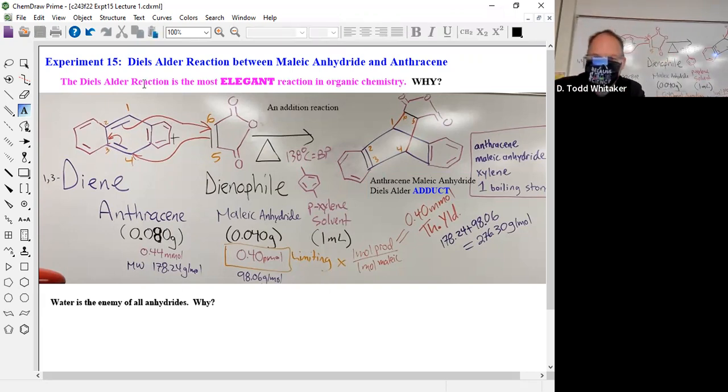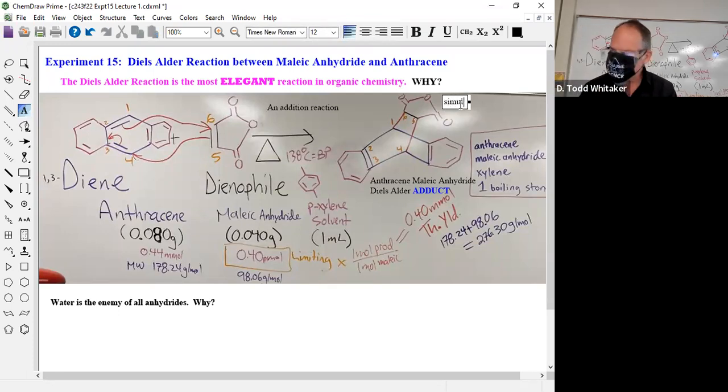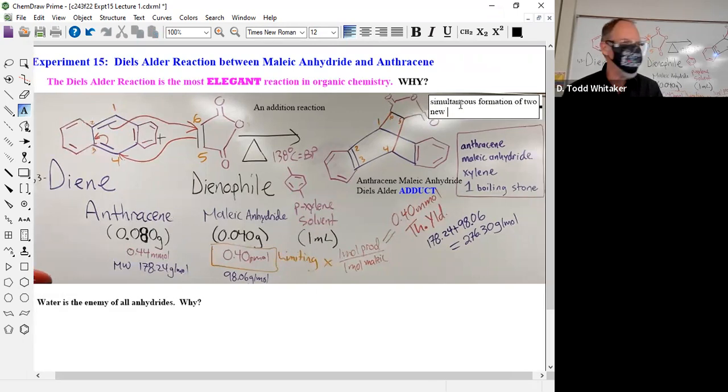It says the Diels-Alder reaction is the most elegant reaction in organic chemistry, and why? We mentioned it during the lecture. We couldn't do the zoom earlier because we had technical issues. Simultaneous formation of two new—what are those new red bonds called? Sigma bonds. How do I make an 's' into a sigma symbol?